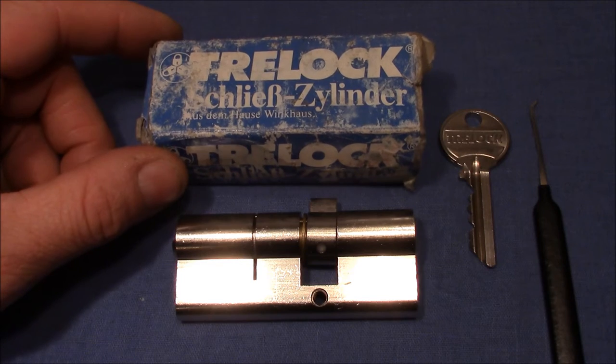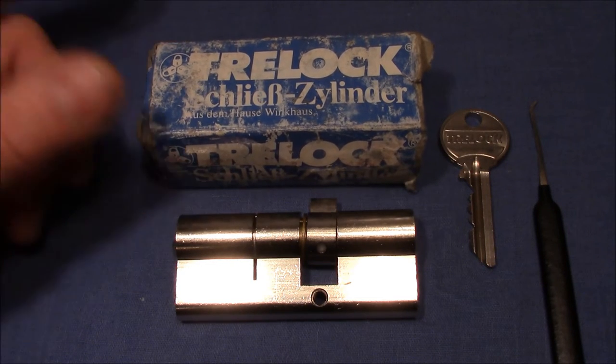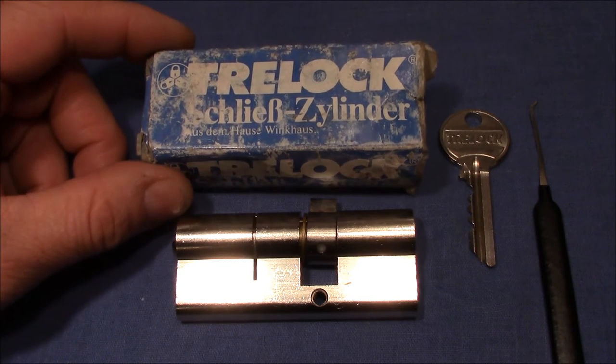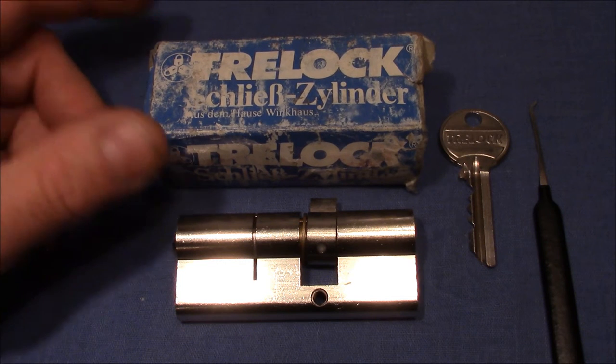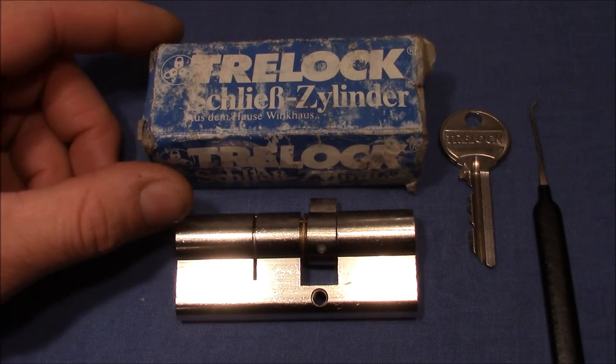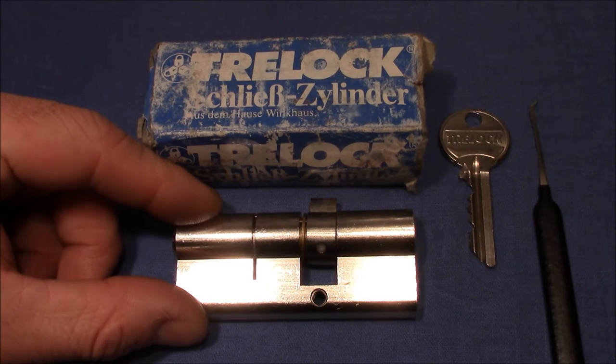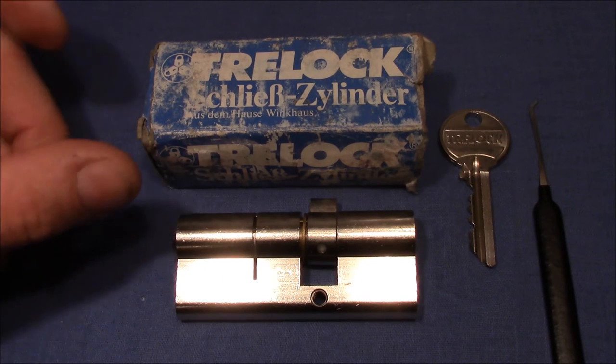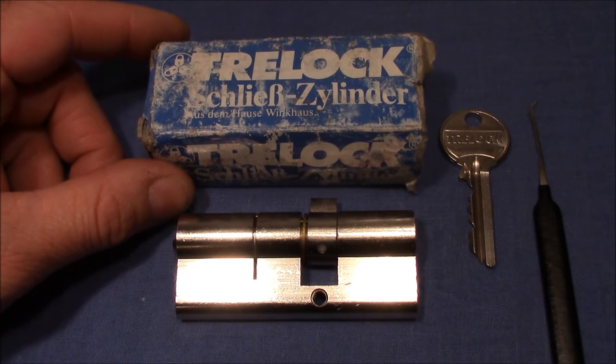As you can see from the package, this lock is not brand new. If they left the Winkhaus company in 2001, you can see that it is at least 15 years old, but it's still unused and you will find Trelock Eurocylinders on many German doors.